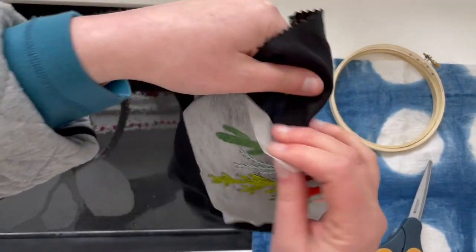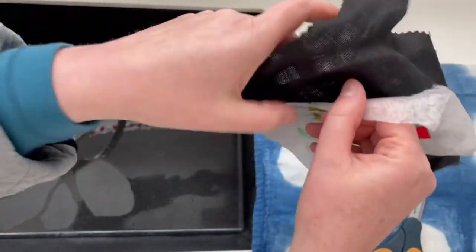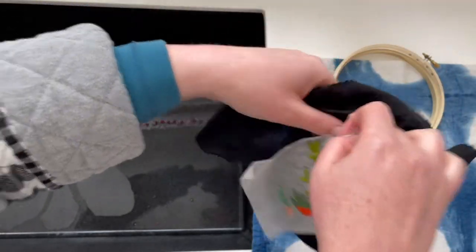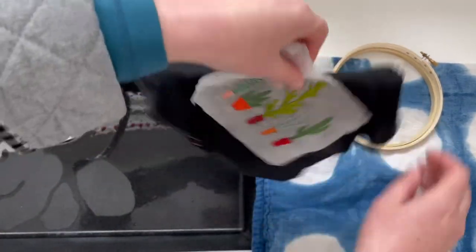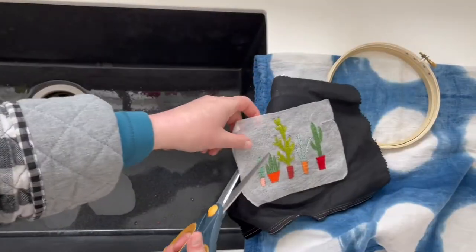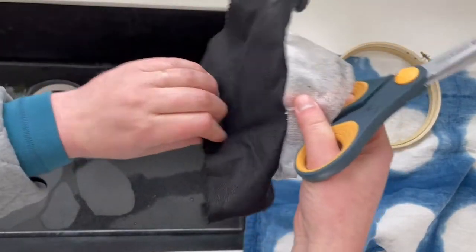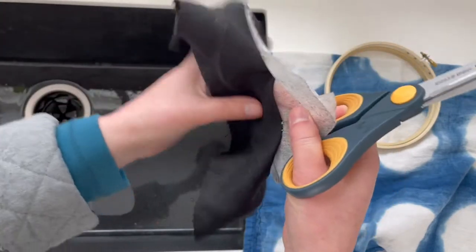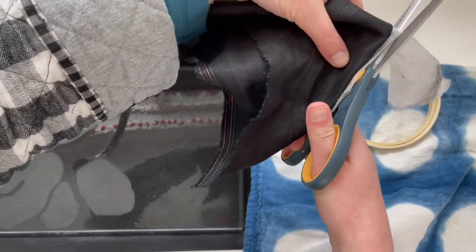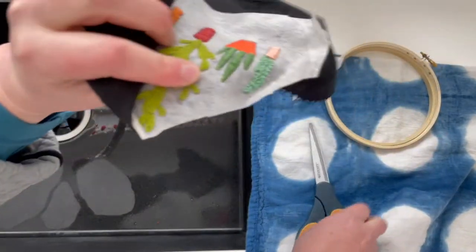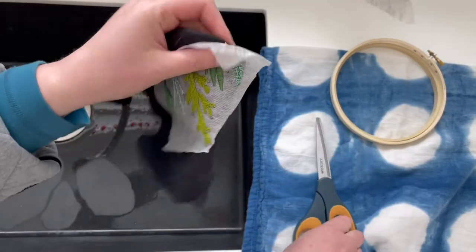And then I will just trim the excess a little bit. The reason I trim it is because after I've washed it - just be really careful that you don't trim your fabric behind. Actually, maybe this would be a smarter way to do it, like this, so I make sure I don't trim anything. I'm just trimming so there's just a little extra piece off, so that's just less that will have to dissolve.